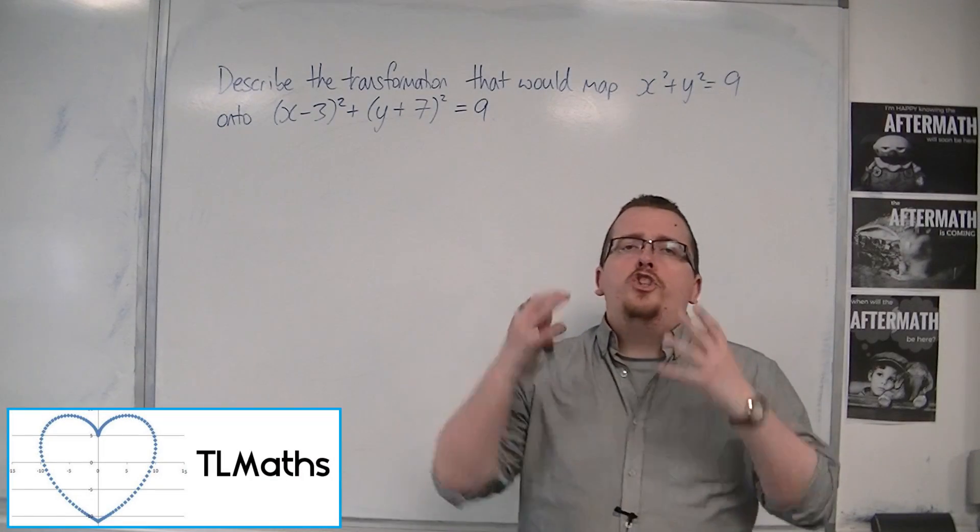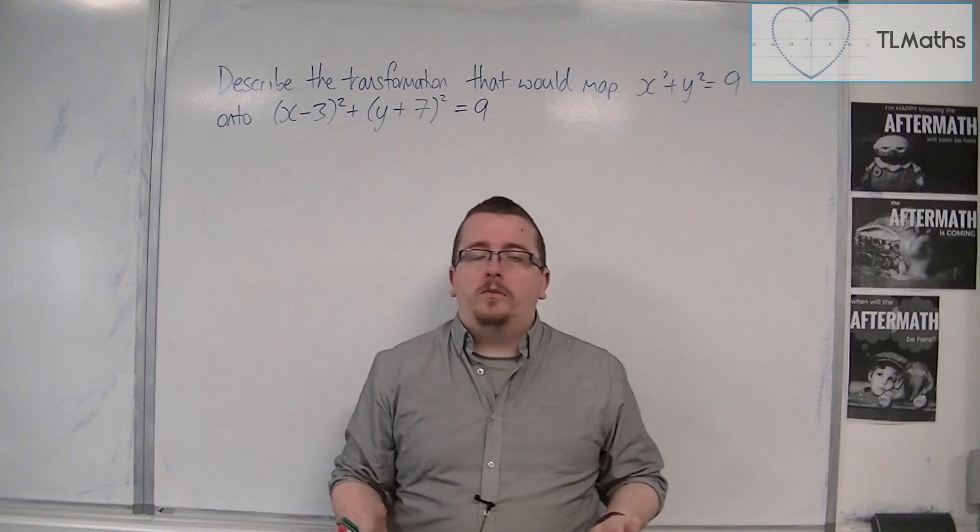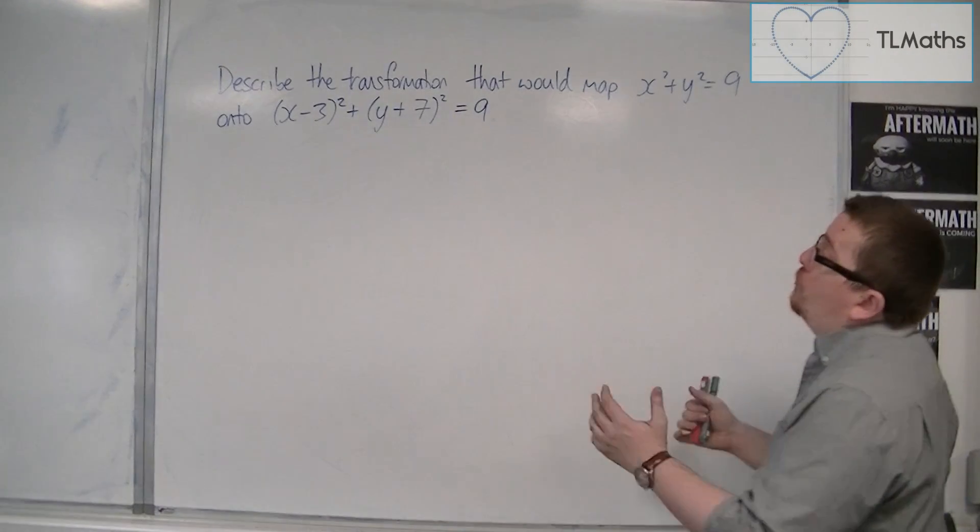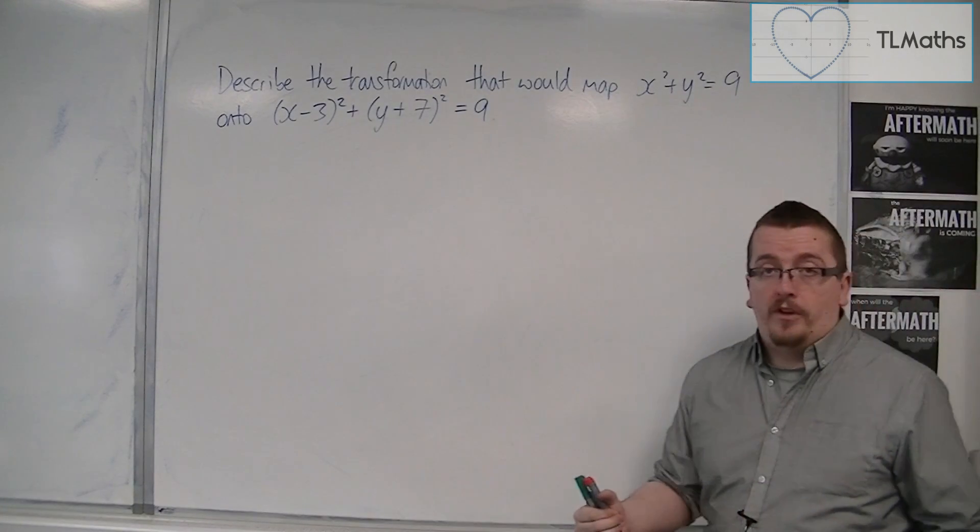So what we want to do is to start generalizing the concepts of the equation of a circle. And here's a question. Describe the transformation that would map x squared plus y squared equals 9 onto x minus 3 squared plus y plus 7 squared equals 9.